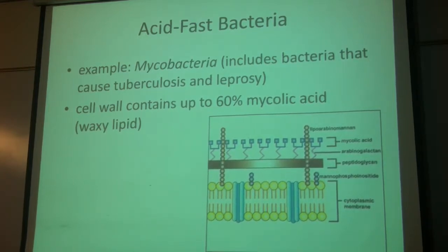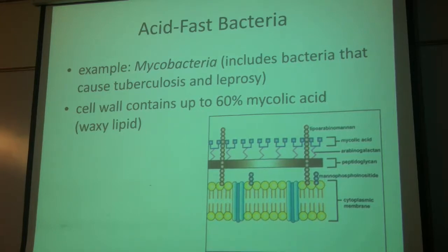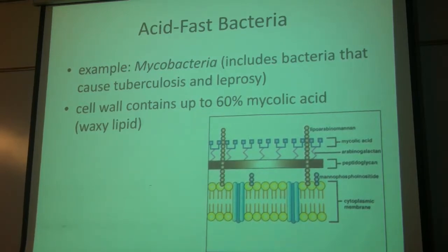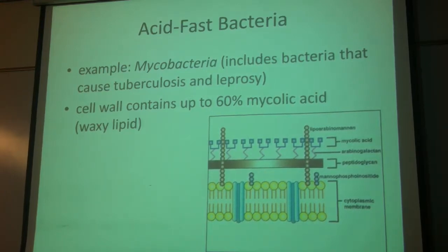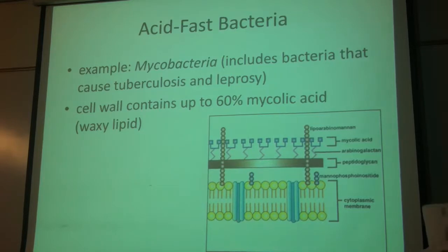Some cell walls have a lot of waxy lipid layers and stuff — those are acid-fast bacteria. We're going to talk a little later about acid-fast stains so we can differentiate what bacteria we're looking at. We have multiple stains because you need to be able to differentiate easily among all the different bacteria.